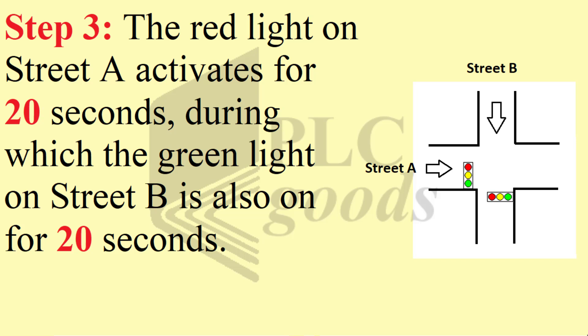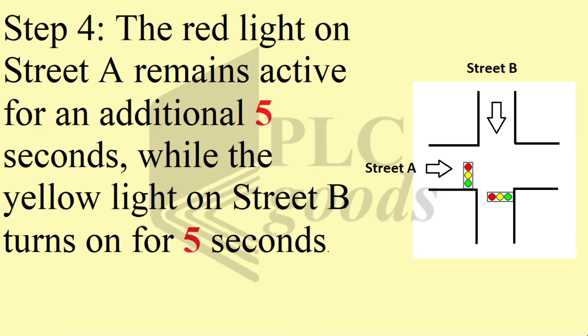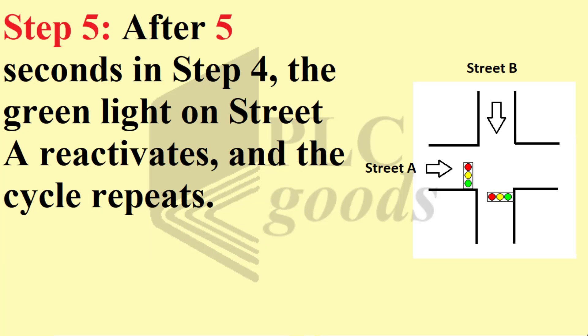Step three: the red light on Street A activates for 20 seconds, during which the green light on Street B is also on for 20 seconds. Step four: the red light on Street A remains active for an additional five seconds while the yellow light on Street B turns on for five seconds.